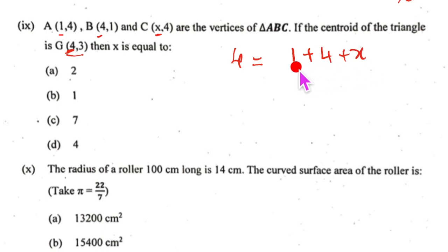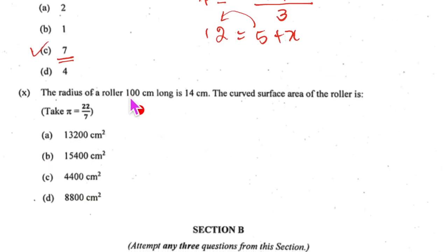See here, this x coordinate, this x coordinate and this x coordinate because our centroid is x1 plus x2 plus x3 upon 3 and y1 plus y2 plus y3 upon 3. So we get 12 equal to 5 plus x and 5 goes there, x is equal to 7. So the option is 7 that is C.